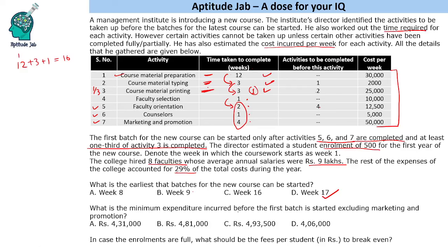The next question: what is the minimum expenditure incurred before the first batch is started, excluding marketing and promotion? So we exclude that activity and find the other expenses. All other activities have to be done — these four have to be done because you cannot have faculty orientation before faculty selection. This covers activity 3, which is one third done. For course material printing, the expense is 25,000 per week, so we keep it as 25,000 only.